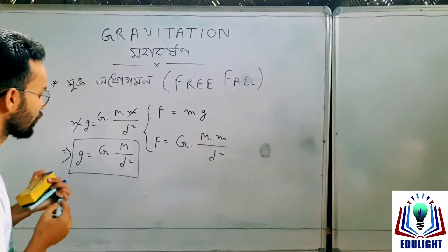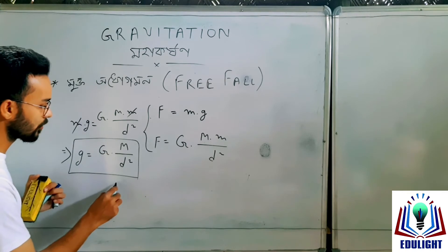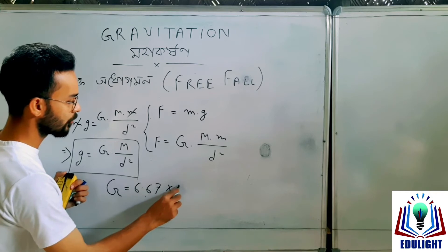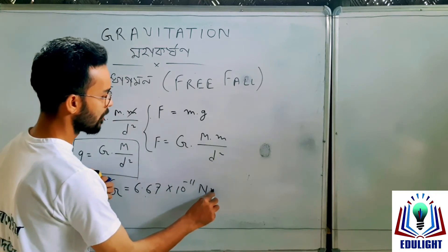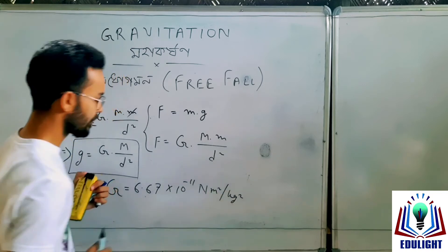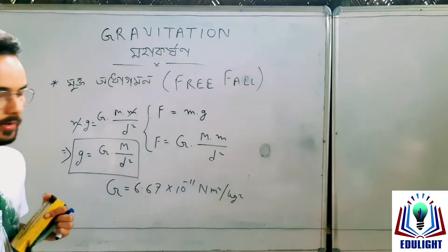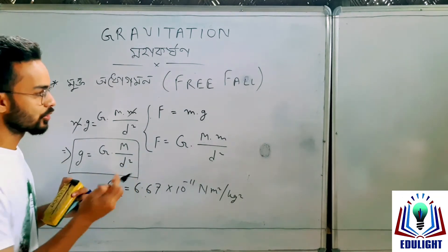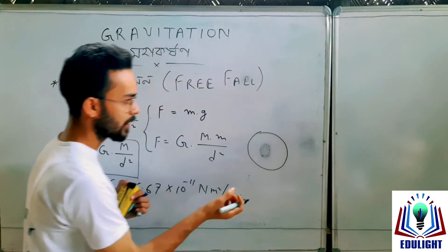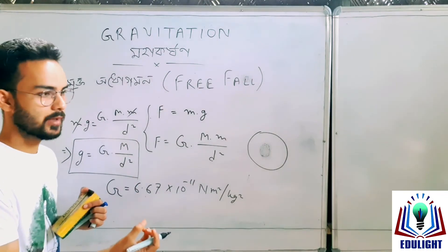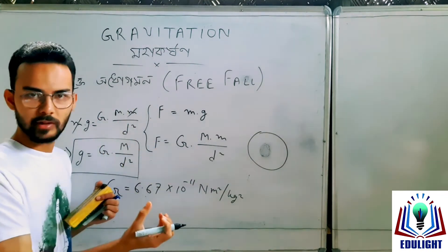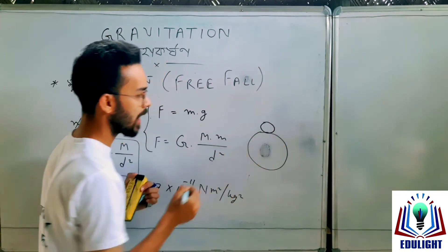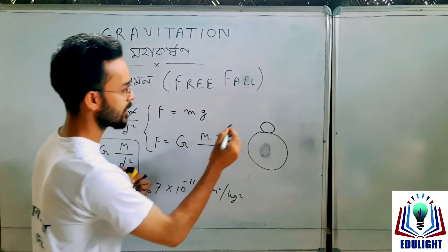So capital G is equal to capital M divided by D squared. So I have the small g expression: small g is equal to capital G times capital M divided by D squared. Capital G is equal to 6.67 into 10 to the power minus 11 Newton meters squared per kg squared, and capital M divided by D squared.